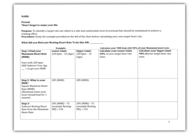The first thing you want to do is write your name on your page. The next thing you want to do is write in your resting heart rate, which you should have calculated this morning right when you got out of bed — that is the best time to get the most accurate resting heart rate. My resting heart rate was 50 beats per minute, so I put 50 in there.